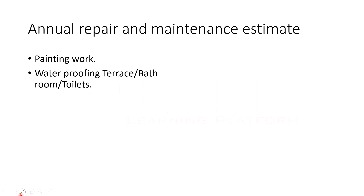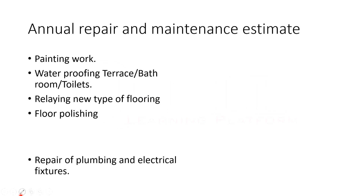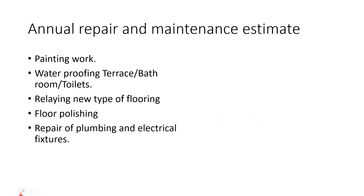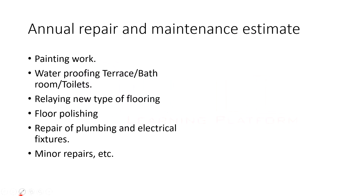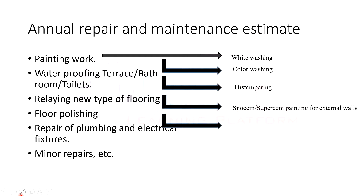Annual repair work for buildings includes: painting work, waterproofing of terraces, bathrooms, or toilets, relaying new flooring, flooring polish, repair of plumbing and electrical fixtures, minor repairs, whitewashing, color washing, distempering, painting of external walls, and repairing doors, windows, and ventilators.